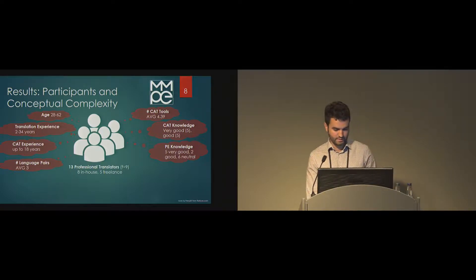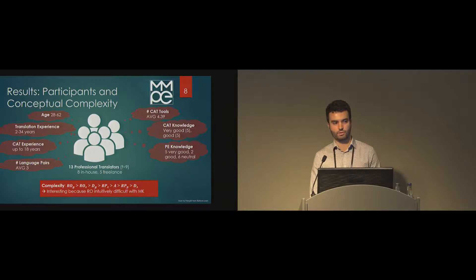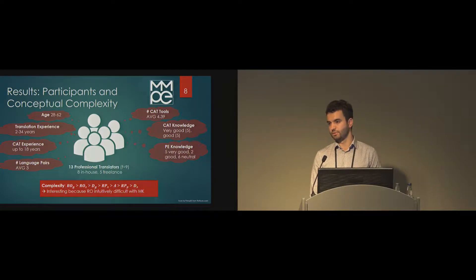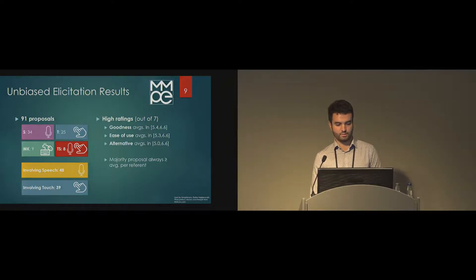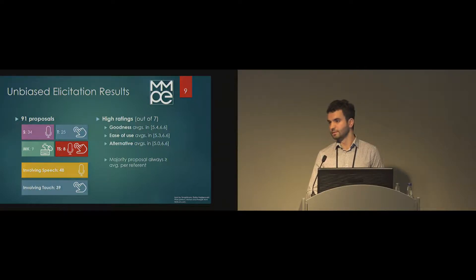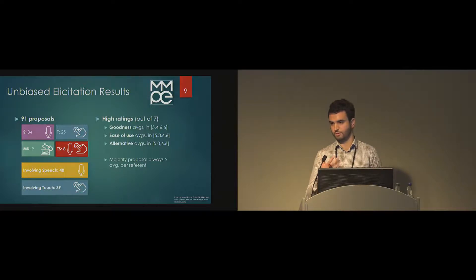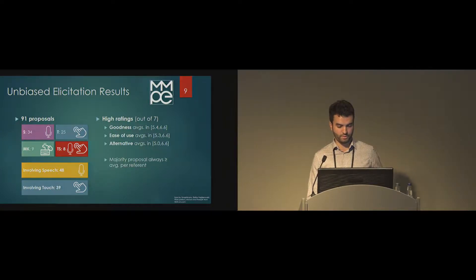On average they translated three language pairs and had used more than four CAT tools. Their CAT knowledge was rated as very good or good; however, post-editing knowledge was less strong, which is common because even though post-editing is faster and yields better translations, many translators still don't do it — having worked another way for 30 years. However, they are now under pressure to switch. Regarding complexity ratings, reordering was seen as most difficult, which is interesting because it's also intuitively hard to do with mouse and keyboard — and where touch might be especially useful. In the first unbiased elicitation, we got 91 proposals — one per participant per referent — and most dealt with speech or touch, either alone or in combination. Ratings were quite high, showing participants really liked their proposals.